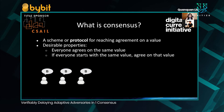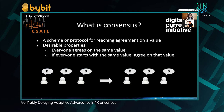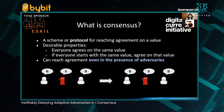Furthermore, we want the additional property that if everyone starts with the same value, they also agree on the same value. For example, if everyone starts with B, they should agree on B, not A or C. In a real-life distributed system, not everyone participating in consensus is honest. Thus, we also want the property that all honest players can reach agreement even in the presence of adversaries. Even if there is an adversary, all honest participants should reach agreement on the value B.